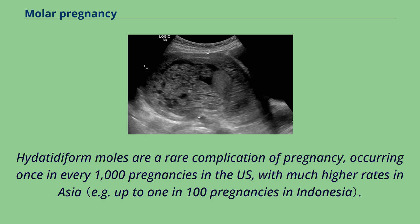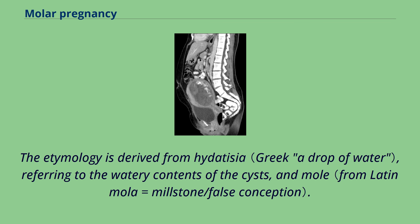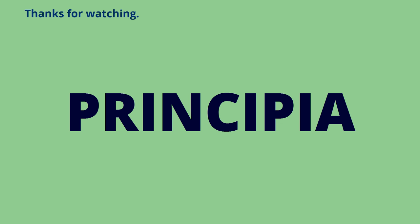Hydatidiform moles are a rare complication of pregnancy, occurring once in every 1,000 pregnancies in the US, with much higher rates in Asia. The etymology is derived from hydatisia, referring to the watery contents of the cysts, and mole. The term, however, comes from the similar appearance of the cyst to a hydatid cyst in an echinococcosis.